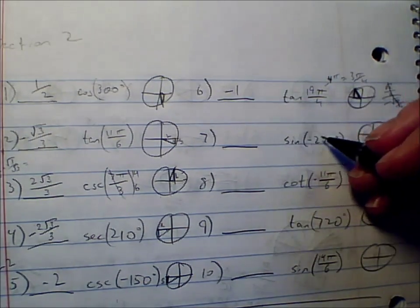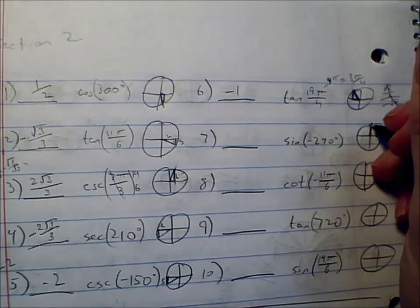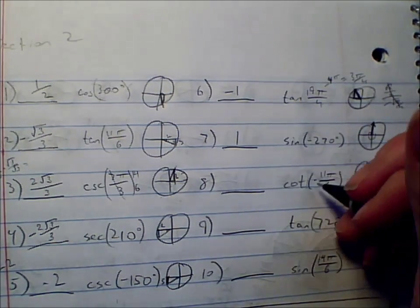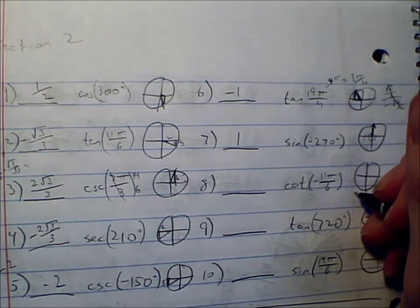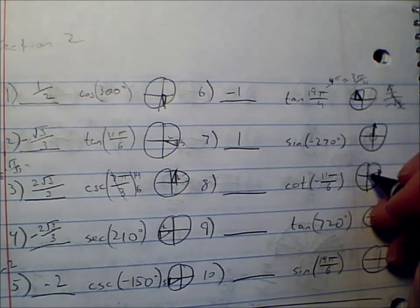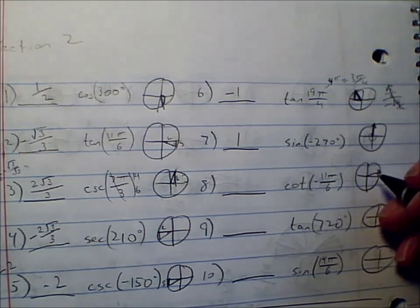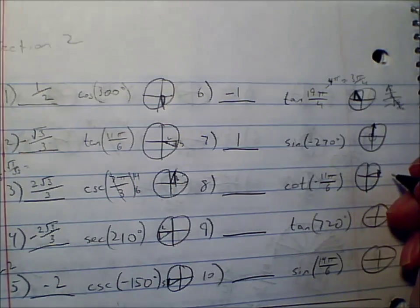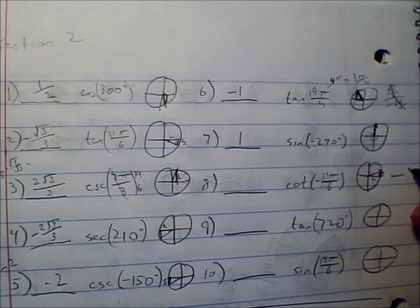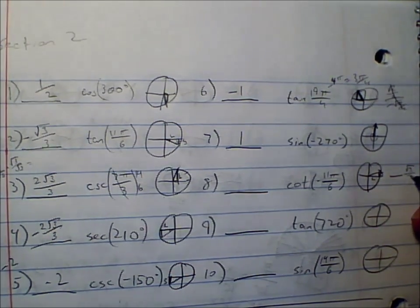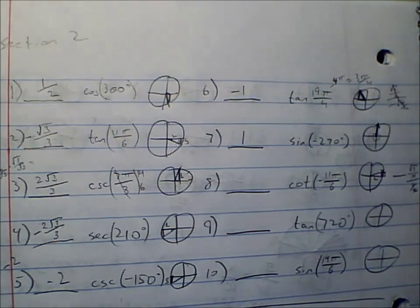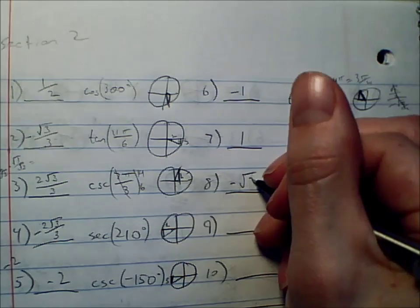Number 7. Sine of negative 270. Negative 270 would be up here, rotating around that way. Sine is the y value, which is 1. Number 8. Cotangent of negative 11π over 6. That's over here. We connect it to the x-axis to make a triangle. Cotangent is the reciprocal of tangent. Tangent is y over x, cotangent is x over y. So the x value - this is a 30-60-90 with a long and a short - the x value would be long, so square root of 3 over 2. The y value would be short, so 1 half. The 2s will cancel and leave you with just negative square root of 3 over 1, or negative square root of 3.